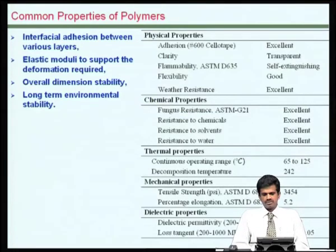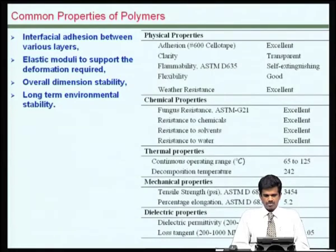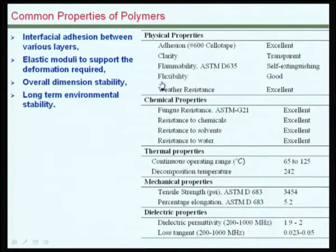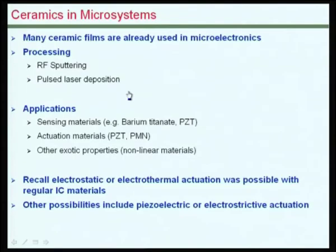To summarize: polymers have several interesting characteristics which could be exploited to build functional micro systems. They have very good elastic moduli so that larger deformations could be realized, good dimensional stability, long-term environmental stability, and good electrical and chemical potential characteristics for most polymers. Polymer micro systems are therefore very likely to become highly popular in the near future.